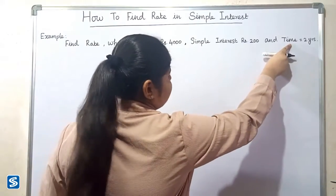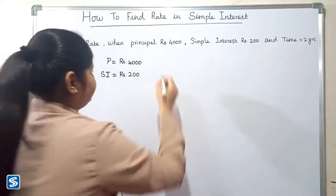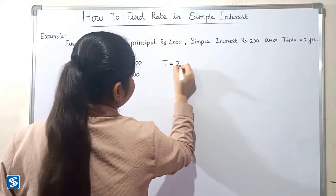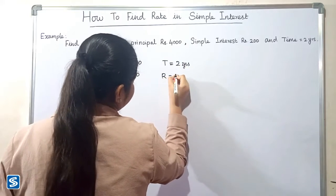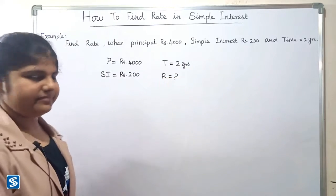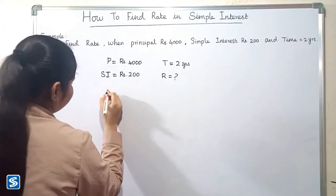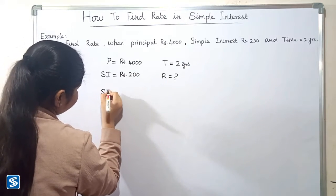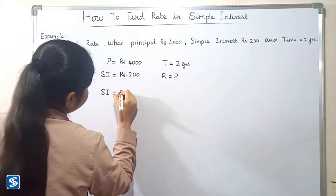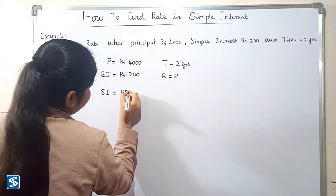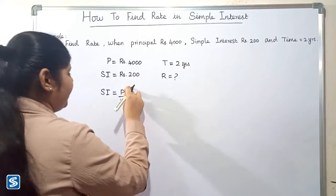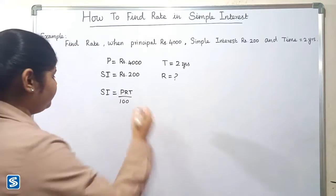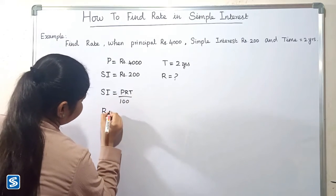time period is 2 years. Now we have to find the rate of interest. We already know that simple interest is equal to PRT by 100. Now we have to find the rate of interest, so rate of interest is